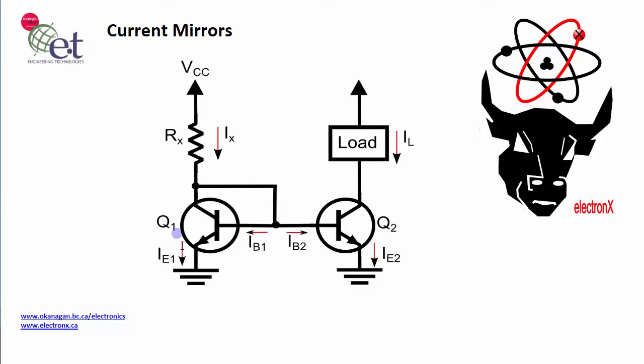So what we're looking at here is a current mirror circuit. The basic idea of a current mirror is that the current IX on this side of the circuit gets mirrored over here on this side of the circuit, regardless of what the load is. That's not totally true.